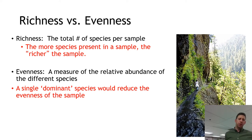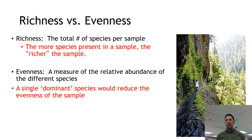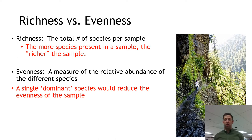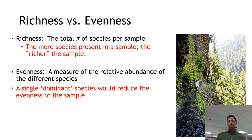The reason we care about evenness is that a single dominant species makes an ecosystem less healthy. A dominant species can crowd out others, and if a disease or factor causes its demise, it could throw the whole ecosystem into turmoil. But if there's an even distribution of species and one goes extinct, the ecosystem is more resilient. A more evenly distributed ecosystem is considered healthier.